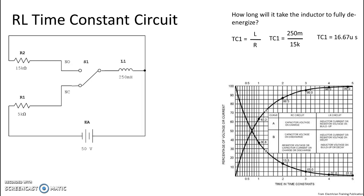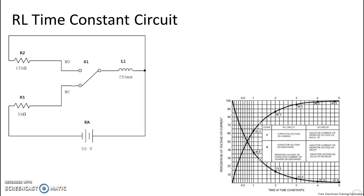All right, now it says fully de-energized so we know that fully for us is five time constants. So we're going to take time constant one and multiply it by five, and that gives us a value of 83.33 microseconds. So we know it takes 83.33 microseconds for the inductor to fully de-energize. Let's try another one.